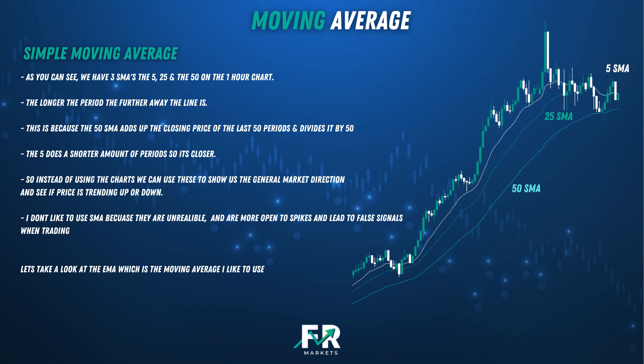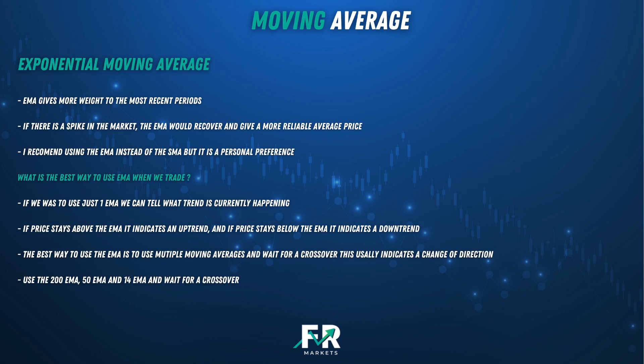Let's take a look at the EMA — the exponential moving average — which is the moving average I prefer to use. This moving average gives more weight to the most recent periods. If there is a spike in the market, the EMA would recover and give a more reliable average price. I recommend using the EMA instead of the SMA, though it is a personal preference — use whichever you're most comfortable with.